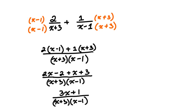This is the sum of the original two expressions. One more thing you always need to remember is to state restrictions on the original expression. In this case, x cannot equal negative 3, because the denominator of the first expression is x plus 3. And x cannot equal positive 1, as that would make the denominator of the second expression equal to 0.